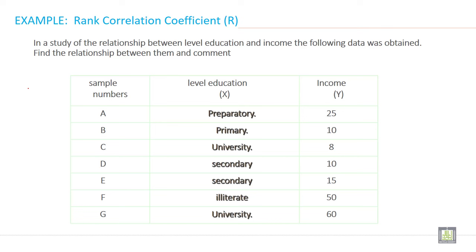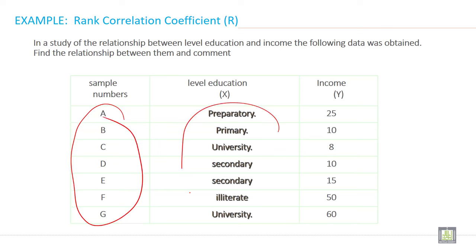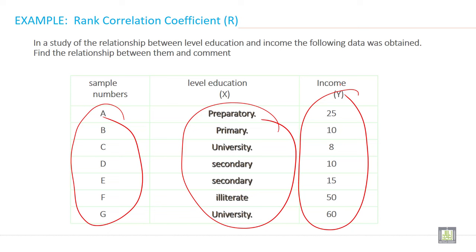There is no rank given. The data has two columns — one data is qualitative and one data is quantitative. So on the basis of these characteristics, you decide that you are going to calculate a Spearman rank correlation.